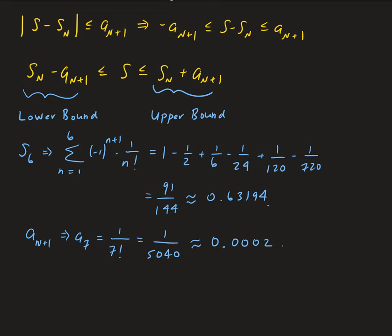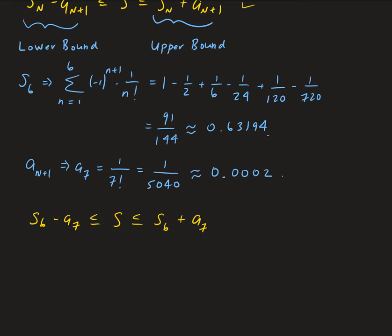Now we have everything to come up with our bounds. For six terms, we have s₆ minus the seventh term as our lower bound, and s₆ plus the seventh term as our upper bound. Plugging those values in: 0.63194 minus 0.0002 is less than or equal to s, and s is less than or equal to 0.63194 plus 0.0002.